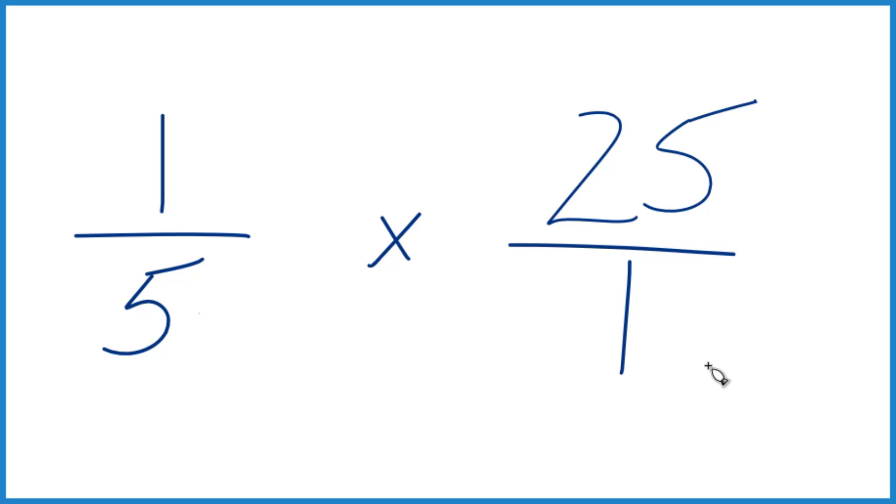25 divided by 1, it's still 25, but now the numerators and denominators line up and we multiply these fractions. We multiply numerators, then denominators.